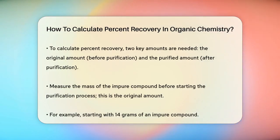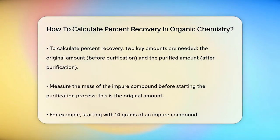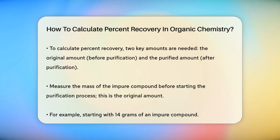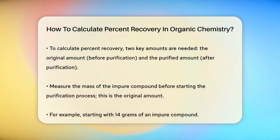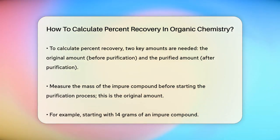To calculate the percent recovery, you need to know two key amounts: the amount of the substance before purification and the amount after purification. Let's call the amount before purification the original amount and the amount after purification the purified amount. First, measure the mass of the substance before you start the purification process — this is your original amount. For example, let's say you start with 14 grams of an impure compound.